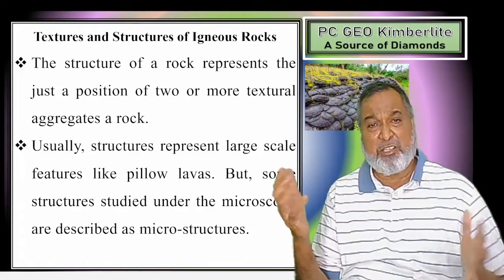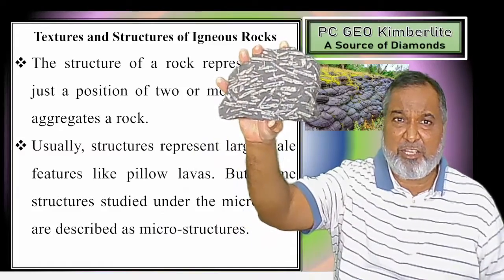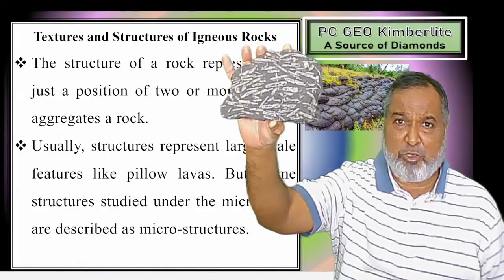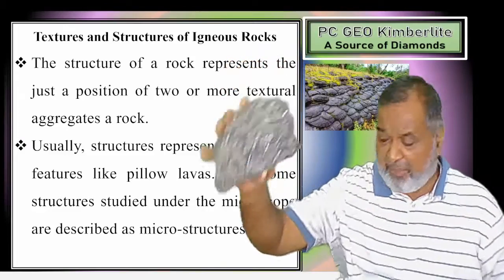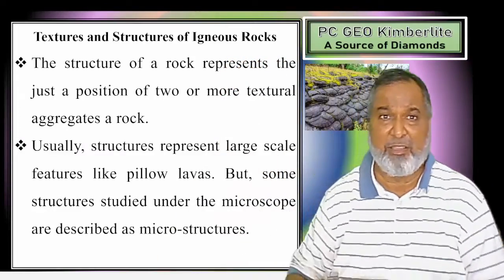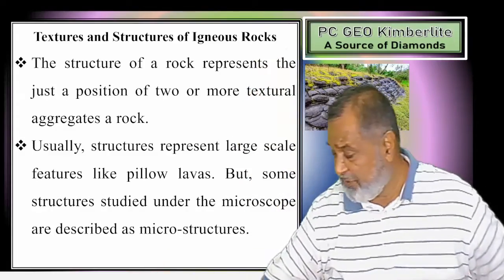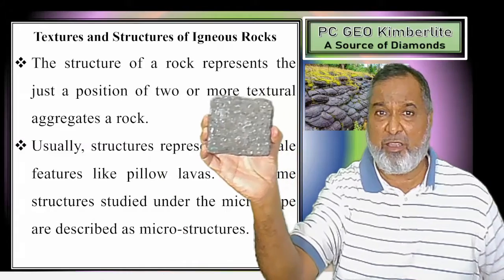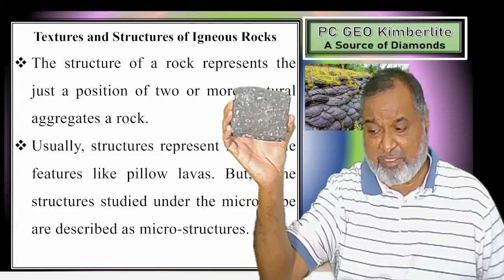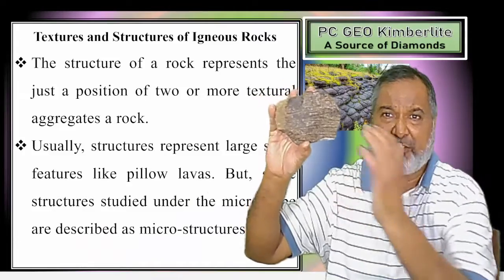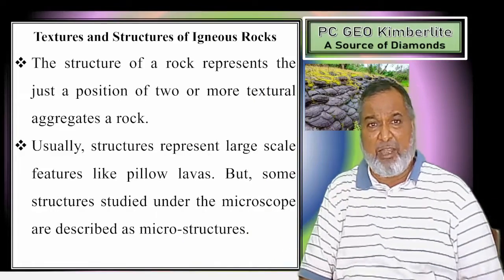What is Structure? Structure is the surface of the rock showing you features. For example, these large tabular-shaped crystals - plagioclase - surrounded by fine-grain crystals - that is a texture. Whereas the surface of the rock showing vesicles is called structure. Similarly, vesicles filled by secondary material is called amygdaloidal structure. Or we have flow structure. These are the surface features of the rock that we call structures.